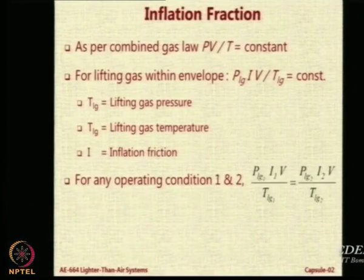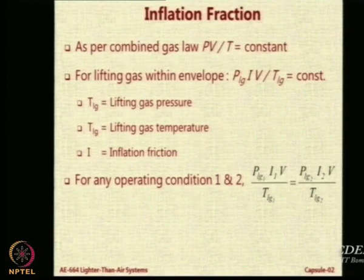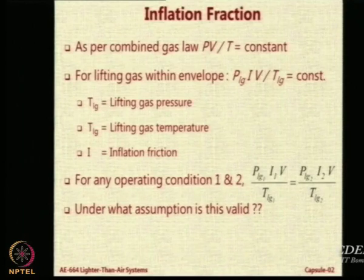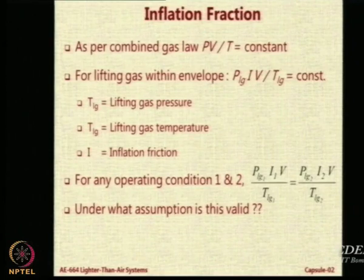If there is any operating condition 1 and from there you go to condition 2, then P_LG1 × I1 × V / T_LG1 will be equal to the same expression for the second condition. But keep in mind there is a very important assumption we are making when we equate these two quantities. Can you think and tell me what we are assuming when we say P_LG1 × I1 × V / T_LG1 equals the values for the second operating condition? Or specifically, under what condition will this equality be invalid?